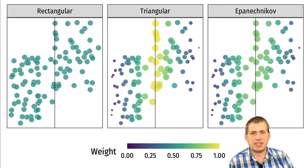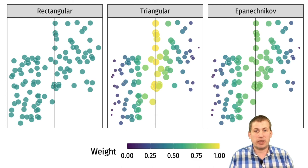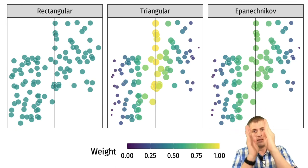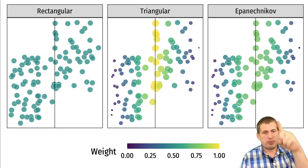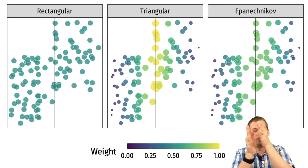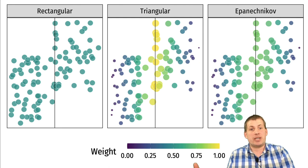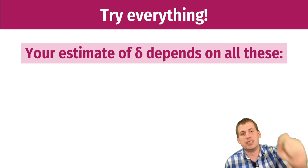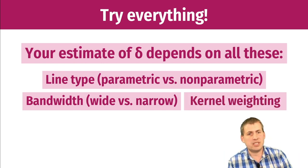Looking at the three kernel approaches visually with regression discontinuity data, where points are sized and colored by their weight: in the rectangular (uniform) kernel, all dots are the same size and importance. In the triangular kernel, dots right near the threshold have weight of 100 and shrink in size and color as you move away. In the Epanechnikov kernel, points near the threshold are also important, but importance shrinks more slowly than with the triangular kernel. There's no ideal version — you throw them all in and see what happens.